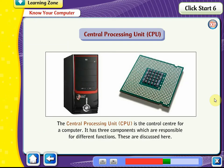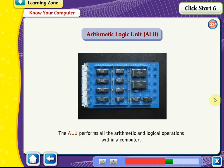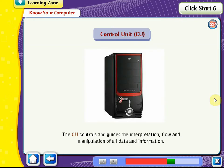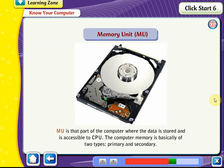The Central Processing Unit (CPU) is the control center for a computer. It has three components responsible for different functions. The Arithmetic Logic Unit (ALU) performs all arithmetic and logical operations within a computer. The Control Unit (CU) controls and guides the interpretation, flow, and manipulation of all data and information. The Memory Unit (MU) is the part of the computer where data is stored and accessible to the CPU.